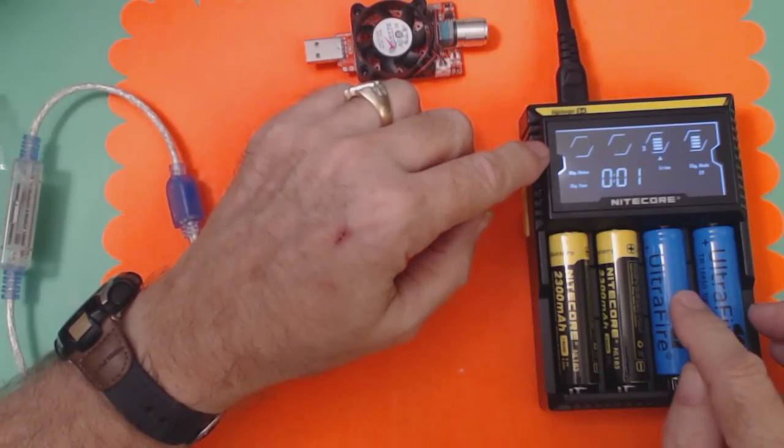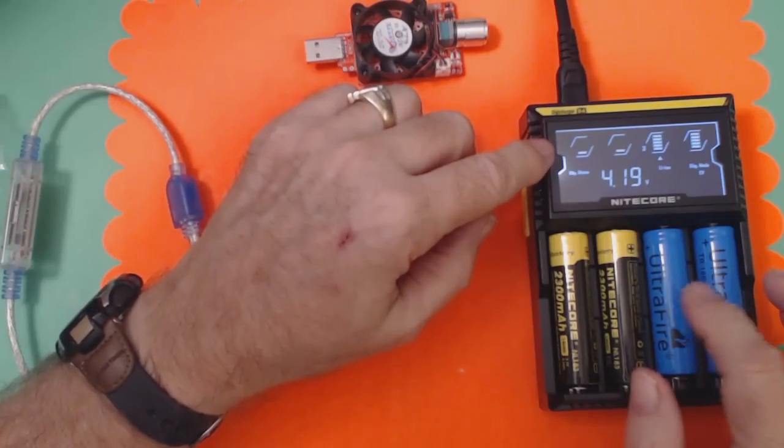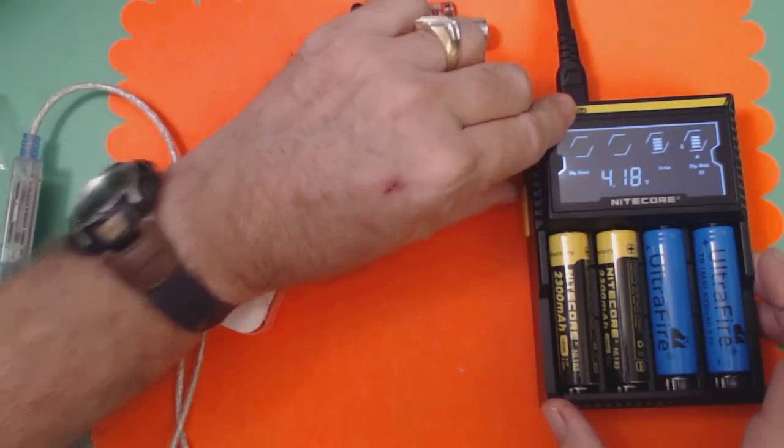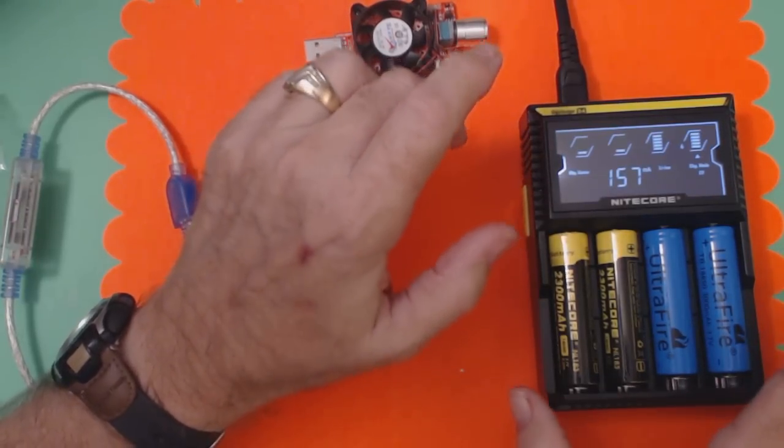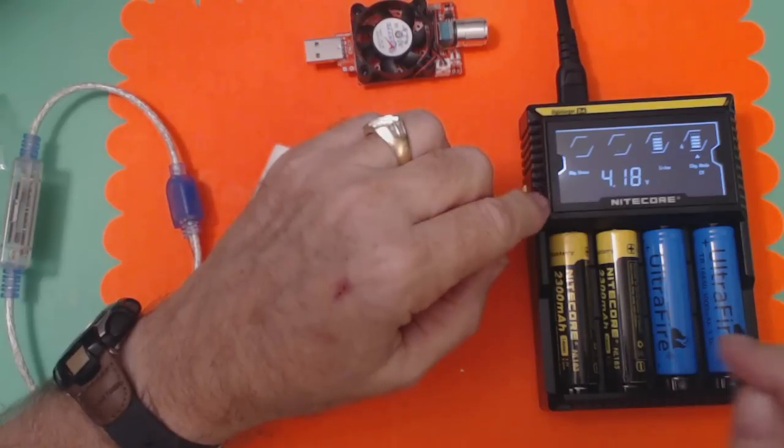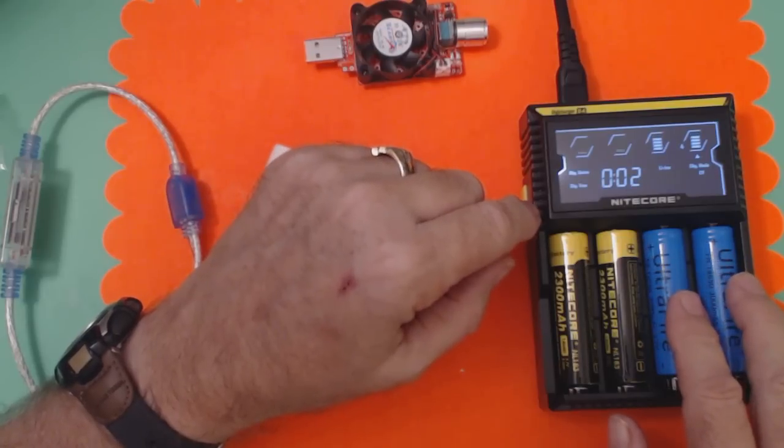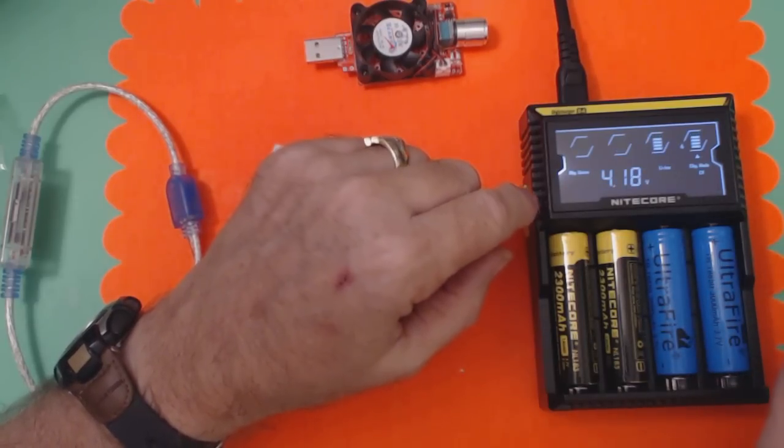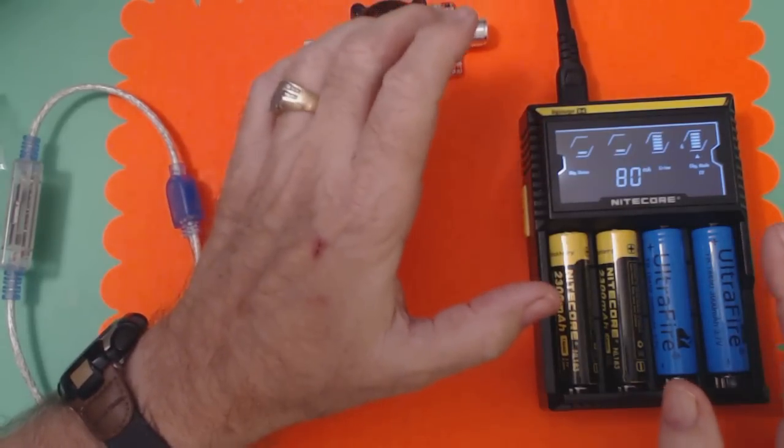This one's at 4.19. Like I said, I already charged this one before but I'm going to top it off. This is at 4.18. This charger will charge this type of battery until it gets to 4.2 volts. So these two down here will charge pretty fast. And maybe I should discharge them before I do the test, but...